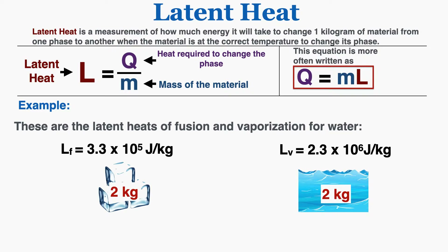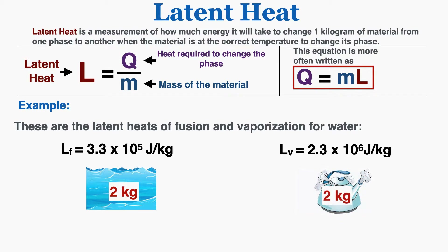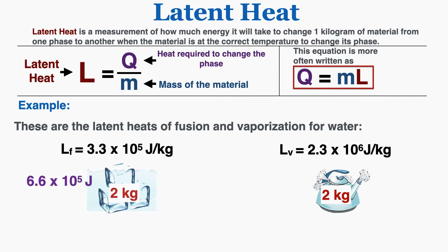Because the latent heat is measured per kilogram, if I have 2 kilograms instead of 1, I would need 2 times the latent heat in energy to convert that doubled mass all into water. And for vaporization, again because the latent heat is 2.3 times 10 to the sixth joules per kilogram, if you have 2 kilograms you would need 4.6 times 10 to the sixth joules to convert that water into steam. Going backwards works the same way.